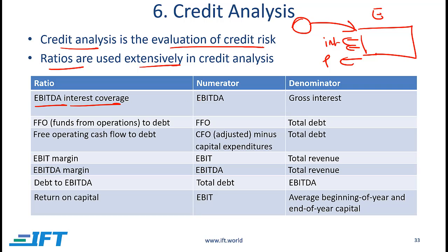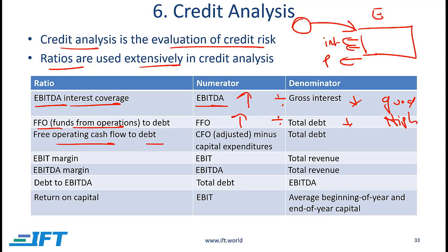Some of the ratios used to evaluate credit risk: EBITDA interest coverage is EBITDA divided by gross interest. A relatively high EBITDA and low gross interest is good, because low gross interest implies a relatively low level of debt and high EBITDA means high cash flow — so high is good. Then we have funds from operations (FFO) divided by debt — again high is good, because we want relatively high funds generated from operations relative to a low level of debt. Free operating cash flow to debt is CFO minus capital expenditures divided by debt — again, high is good.